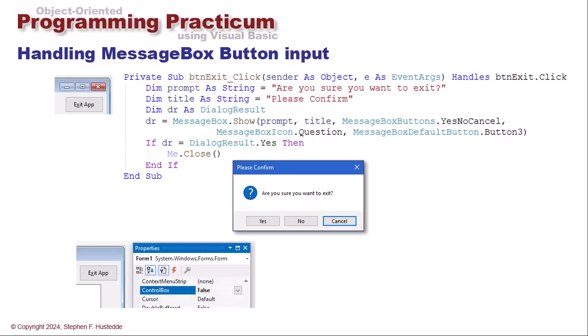We can code an exit button on our application. I have a button named btn exit. I'm going to handle the click event. Now I'm going to set up a prompt and a title. The prompt being, are you sure you want to exit? The title being please confirm. And then my dr is dialogue result. And here dr equals message box dot show.